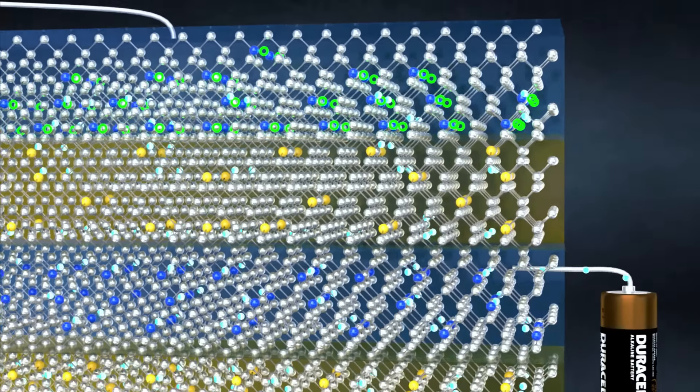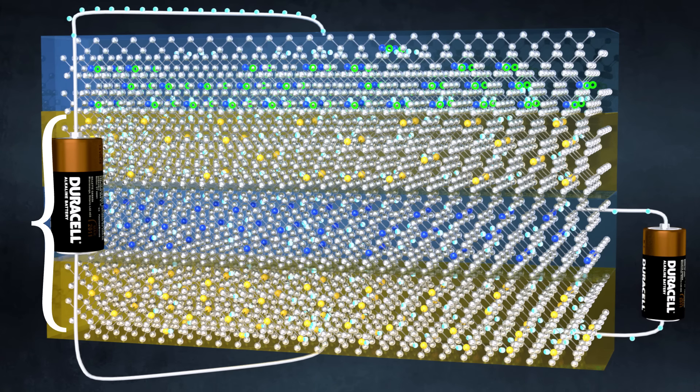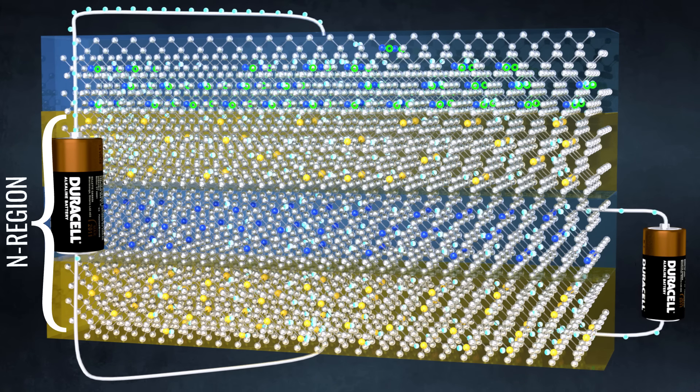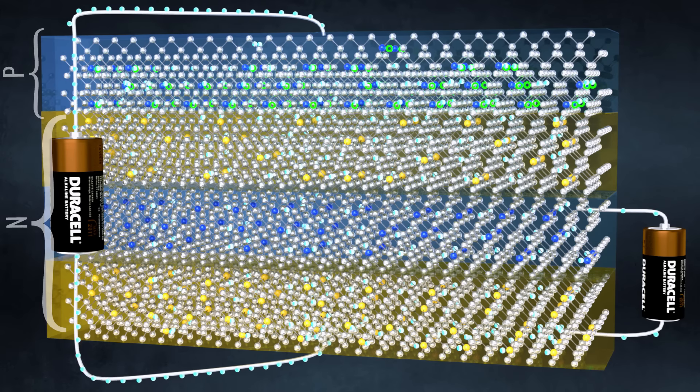As the p-region has become a new n-region due to the gate triggering, the three regions on the bottom side collectively become a big n-region. Now, the structure of a thyristor looks like a p-n junction diode.